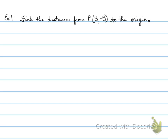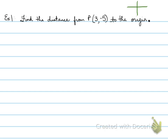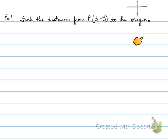Example one: find the distance from P to the origin. What does 'origin' mean? We have a point we can recognize, but where is the origin found? Looking at a grid like this — a Cartesian plane — where would you think the origin is?